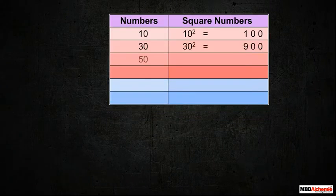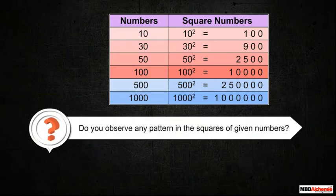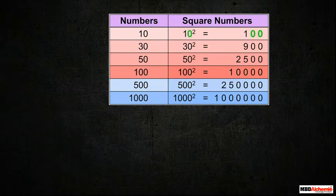Let us see some more numbers whose unit digit is 0. Do you observe any pattern in the squares of given numbers? The number of zeros at the end of the square number is double the number of zeros in the number at the end.